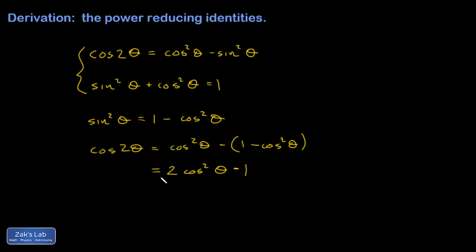Then I'm going to add one to both sides and divide by that coefficient two. I end up with one half, one plus cosine 2θ, equals cosine squared θ. In other words, cosine squared θ is one half times one plus cosine 2θ.